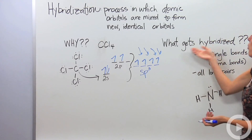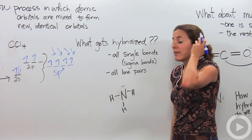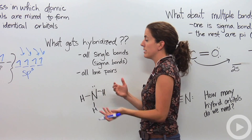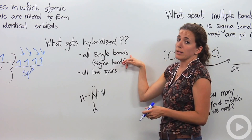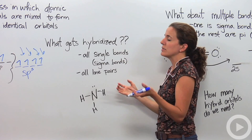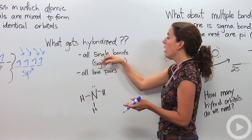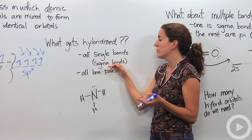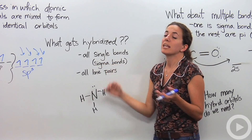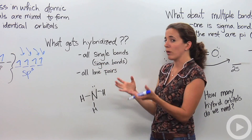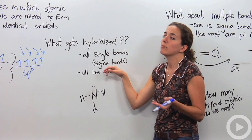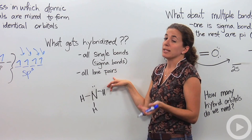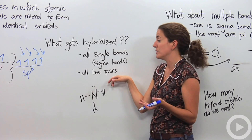So what actually gets hybridized? All single bonds are going to be hybridized because no single bond is more energetic than another. Because they're hybridized bonds, we're going to call single bonds sigma bonds — that's just the way the orbitals overlap. Lone pairs are also going to be hybridized because they're not higher or lower in energy than those bonds either.